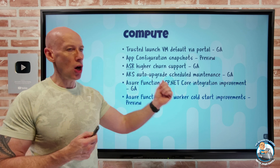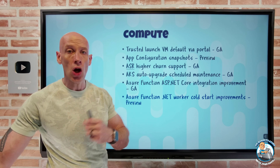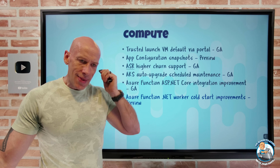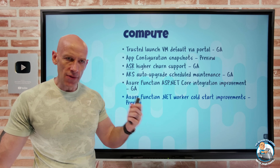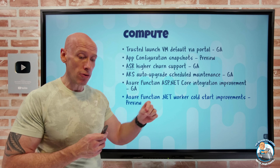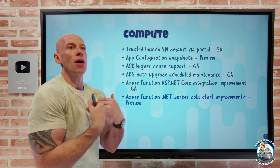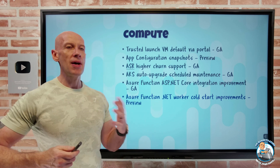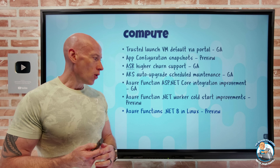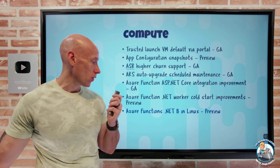They've also made improvements to cold start. If you have an application sensitive to cold start — waiting for it to launch before you can interact — the initialization slowdown has been addressed. They've introduced concepts like placeholders, optimized the executor, and you can do ready-to-run binaries with ahead-of-time compilation. All of this means when you hit a cold start condition, the function will be available much faster. And .NET 8 is now available on Linux Elastic Premium and dedicated plans.